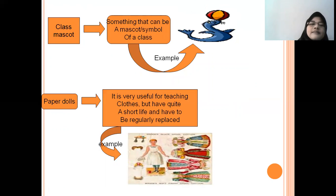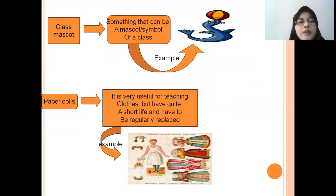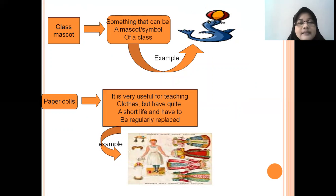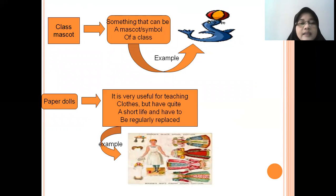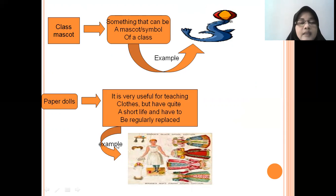And then, class mascot. Mascots are commonly used as the symbol of the class. For example, when you use the dolphin as the mascot, it is a symbol of kindness — so when students are not kind in class, you can remind them using the dolphin or the class mascot.